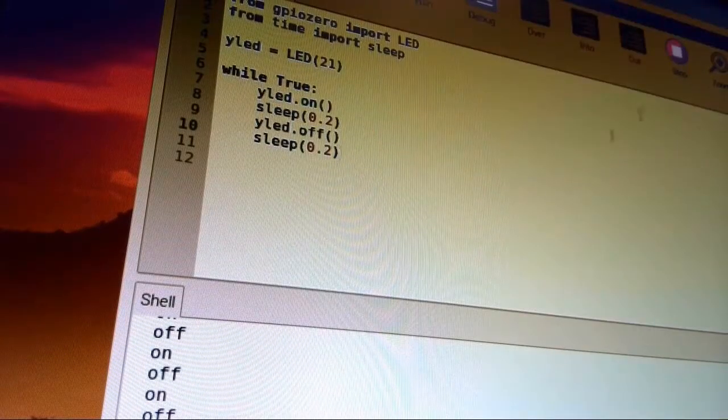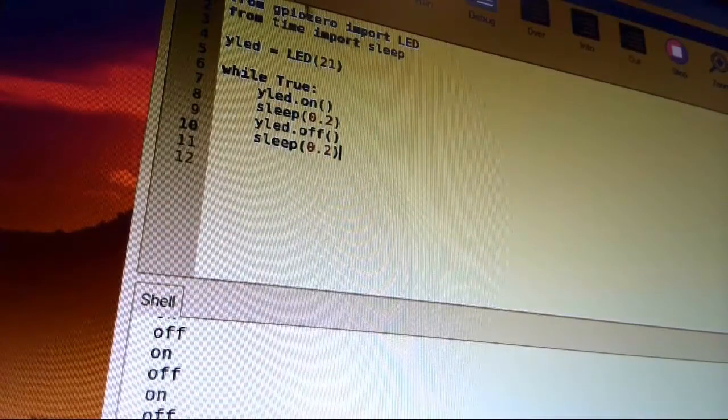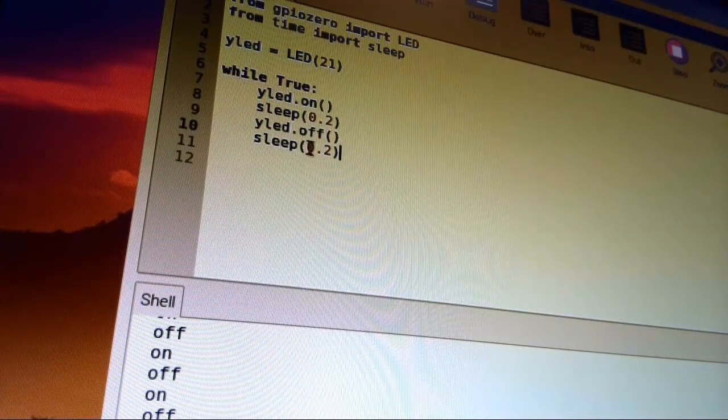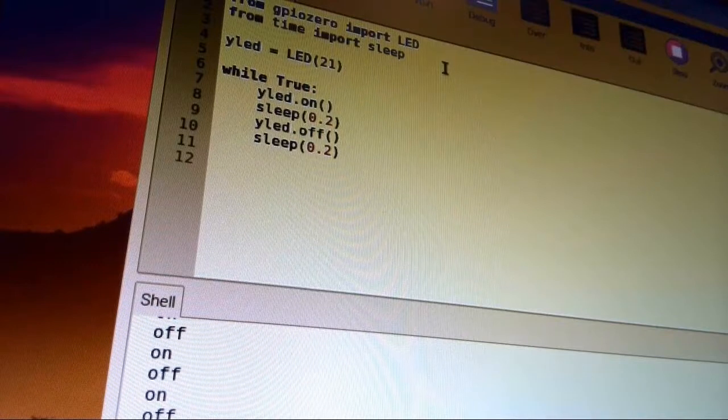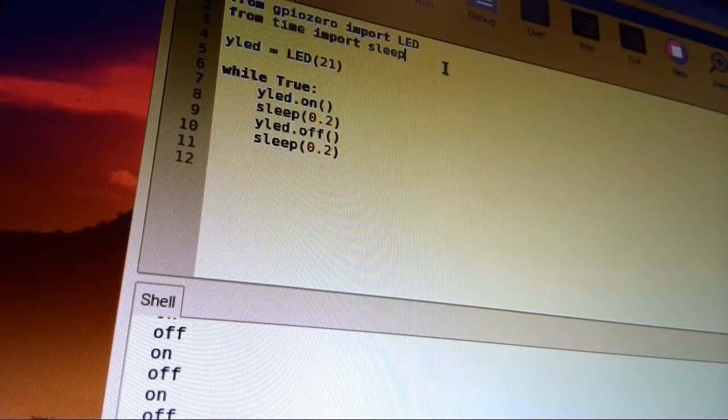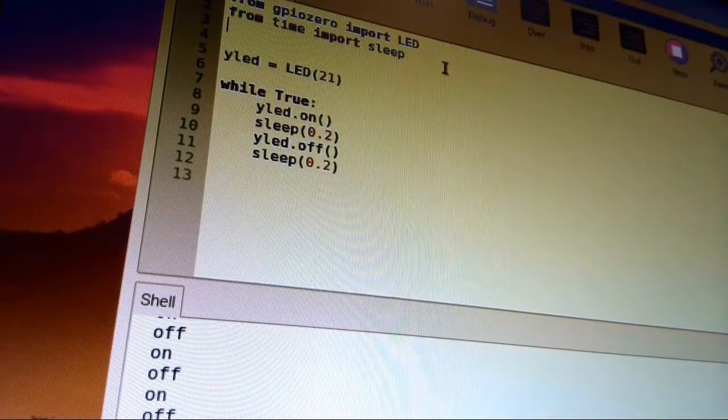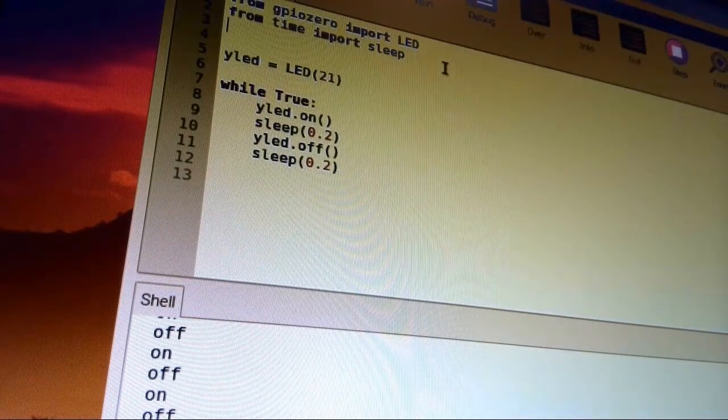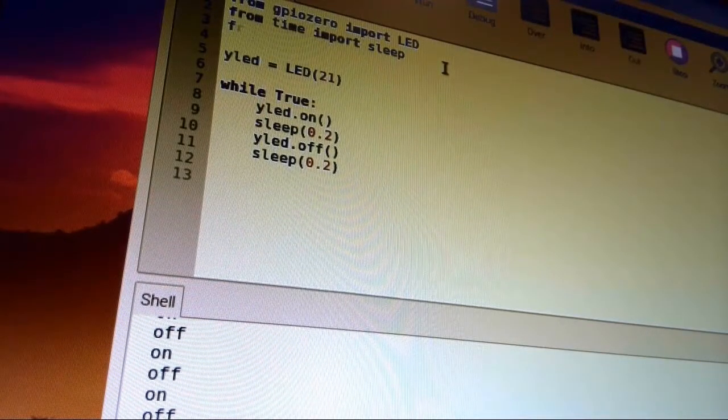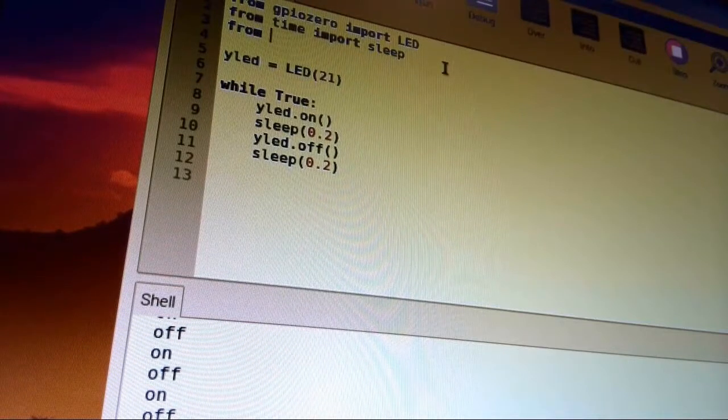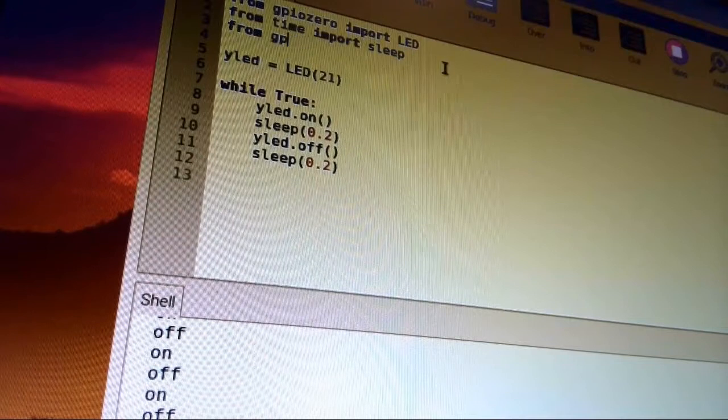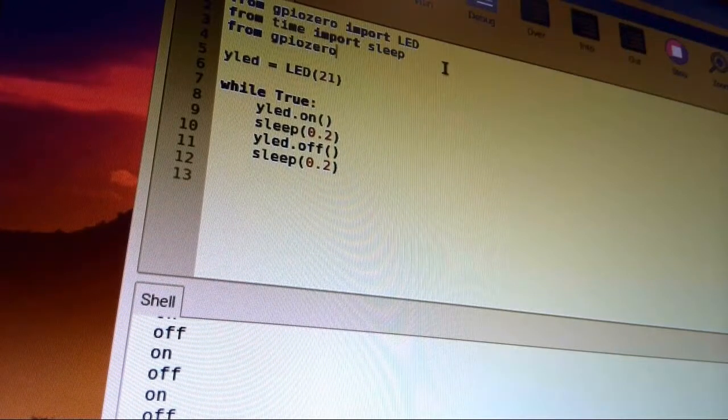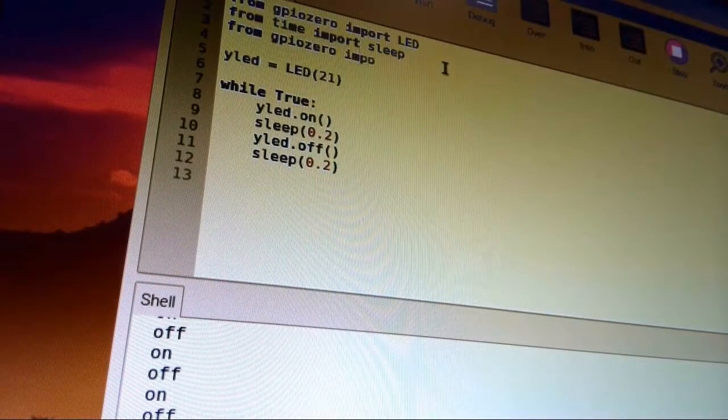Okay, so now we're back in Thonny with our Python program that we wrote to make the LEDs blink. Now, instead of having them just blink forever in a loop, we're going to control the LED using a push button. We're going to start by bringing in the button function from GPIO Zero, so 'from gpiozero import Button'.